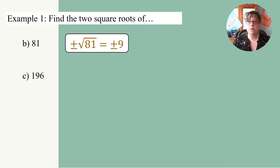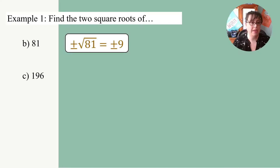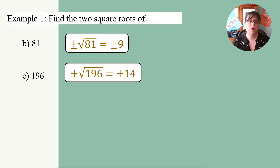Now let's look at 196. Go back to the table we made with all our perfect squares listed out and read it backwards — find 196 and see what number it corresponds to. I know 144 is 12 squared and 169 is 13 squared, so 196 would be 14 squared. Accounting for both positive and negative roots: plus and minus 14.